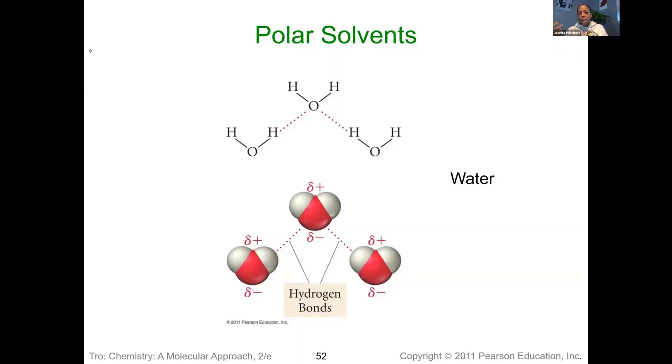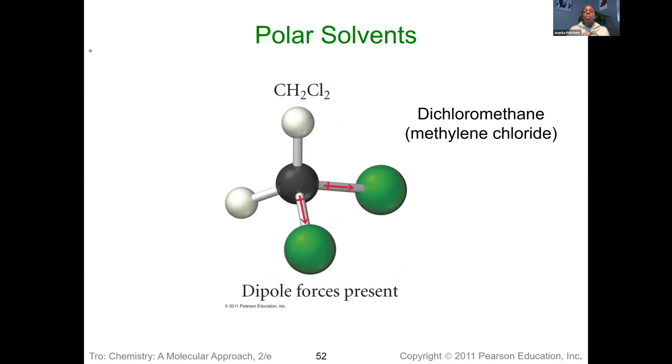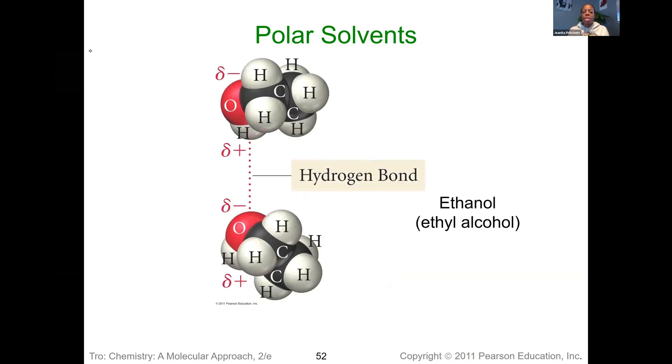So different polar solvents are out there. Of course the universal polar solvent is water. And so we can dissolve a lot of different things in water. But there are also polar solvents like dichloromethane which is also a polar substance because it has those dipole areas present. Or ethanol which has the hydrogen bonding that's present in there.